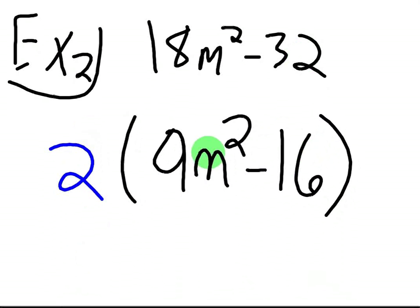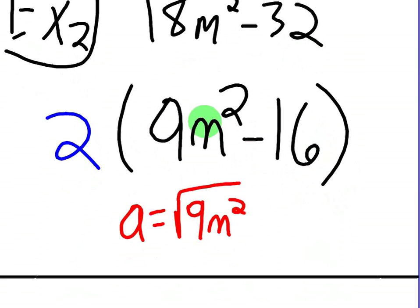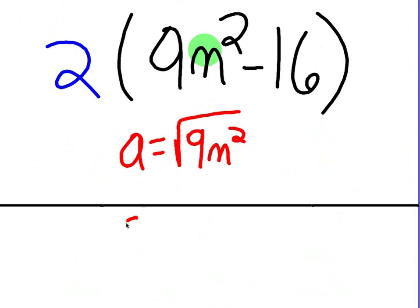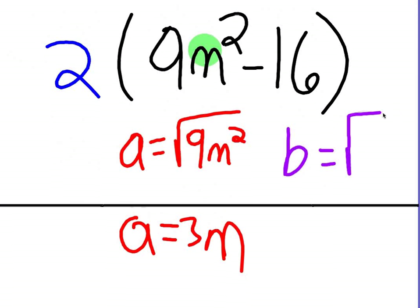So your A is just the square root of the first term. A is going to be equal to what? Square root of 9M squared is the same as 3M. And your B is the square root of the second term. Again, you do not include the minus sign. You do not include the minus sign, just the number after the minus sign, or the term, which is 4.